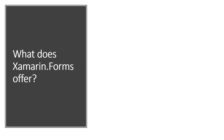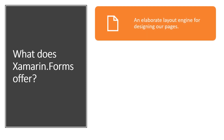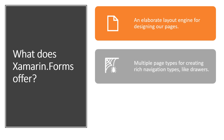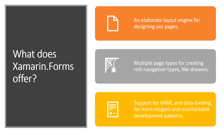What does Xamarin Forms offer? As we've seen, Xamarin Forms makes it easy to access common controls like buttons. Other common controls like text entry fields, labels, and date pickers are just as easy. But individual controls aren't enough to make a good platform for creating rich apps. Xamarin Forms also gives us an elaborate layout engine for designing our pages. You can have multiple page types for creating rich navigation types like drawers, and support for XAML and data binding for more elegant and maintainable development patterns.